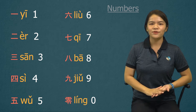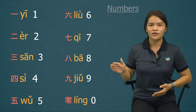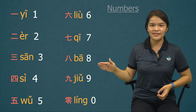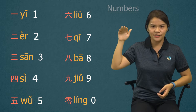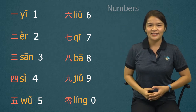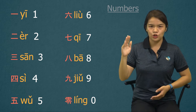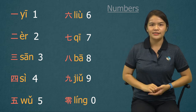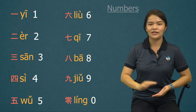Let's repeat number six to zero again. Number six: 六, 六, 六. Number seven: 七, 七, high flat tone, 七. Number eight: 八, 八, 八. Number nine: 九, 九, 九. And zero: 零, rising tone, 零, 零.